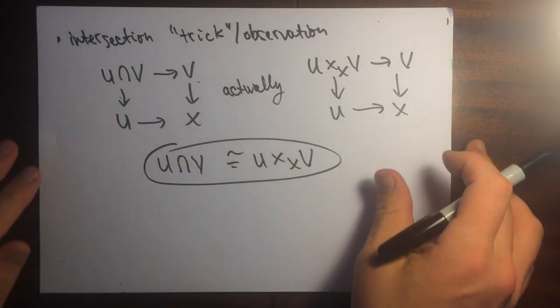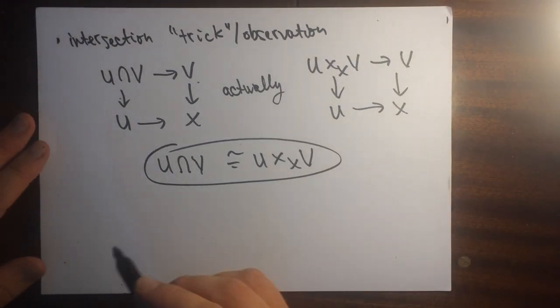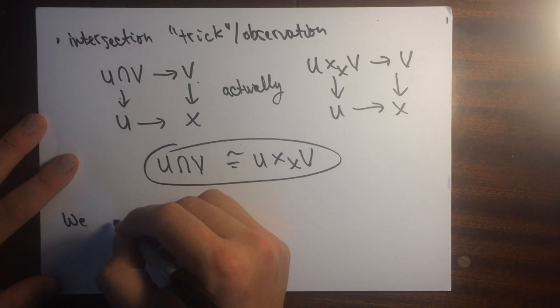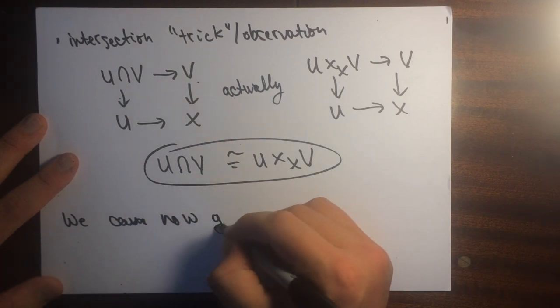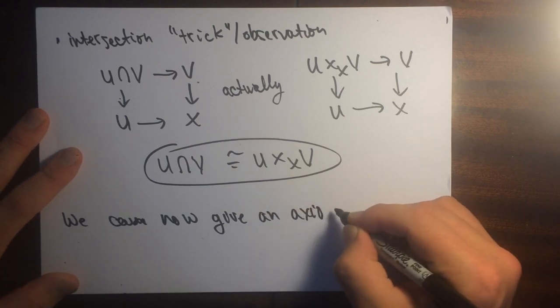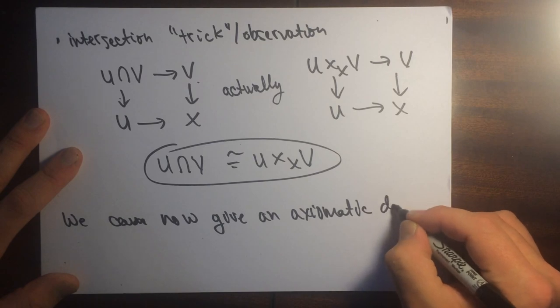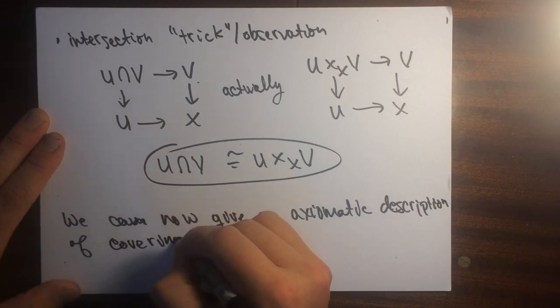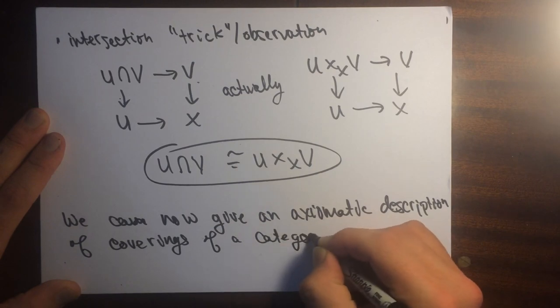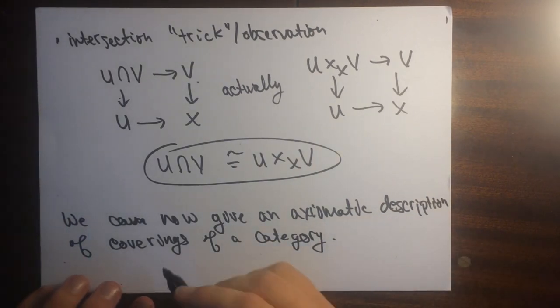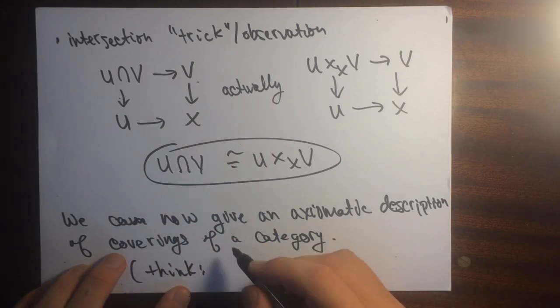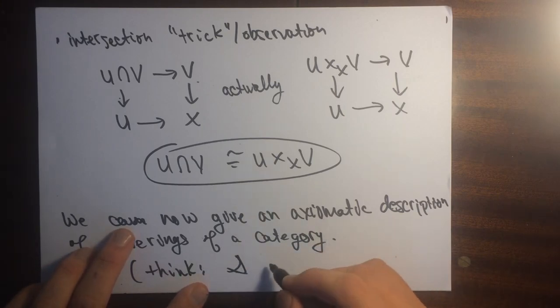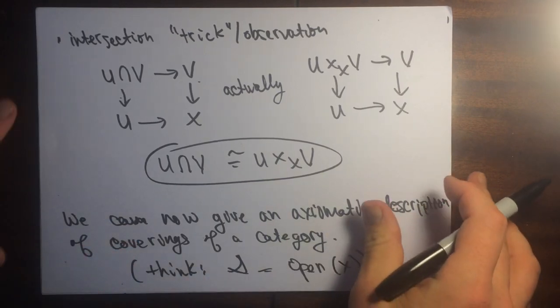And now that we have this thing, this notion, we can give an axiomatic description of what coverings are. We can now give an axiomatic description of coverings of a category. The thing to think about is that this category S, we should think of this as being open of X. But now S can be an arbitrary category.